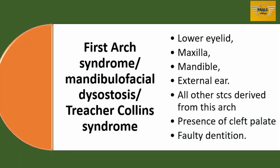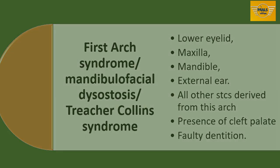We also have a condition where the entire face arch may remain underdeveloped either on one side or both sides. When this happens, it affects the lower eyelid, the maxilla, the mandible, and the external ear. Generally, it affects all the structures that are formed from the first arch. This condition is called mandibulofacial dysostosis, or first arch syndrome, or Treacher Collins syndrome.